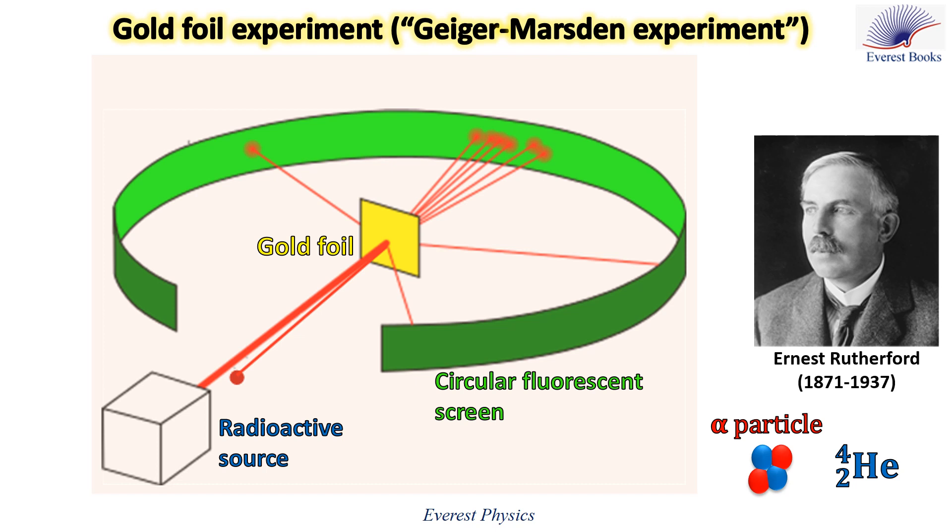Rutherford was astonished with the results. He found that most of the fast moving alpha particles passed straight through the foil. However, some alpha particles were deflected through large angles, and a few alpha particles rebounded.